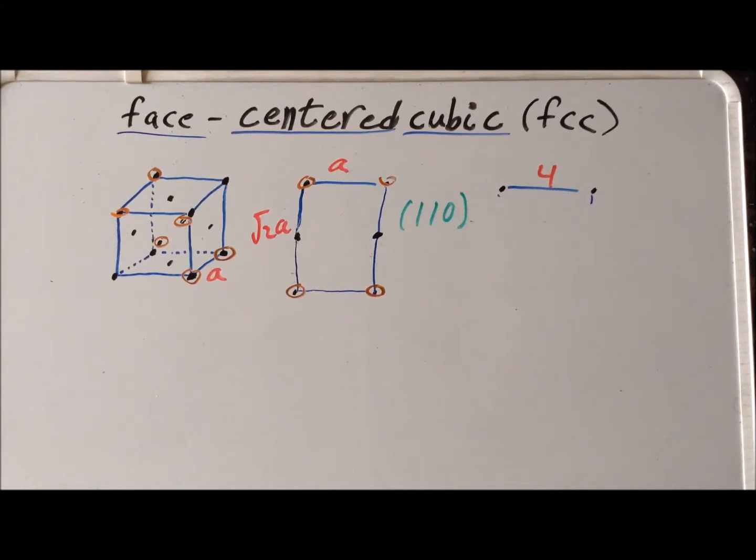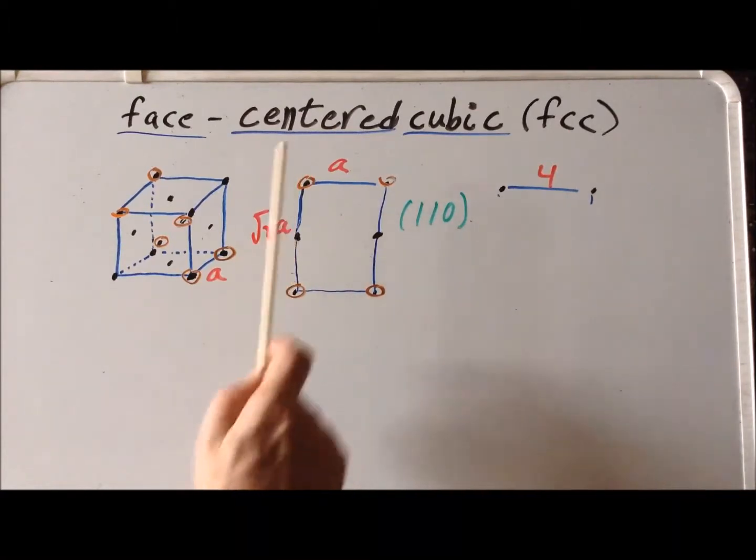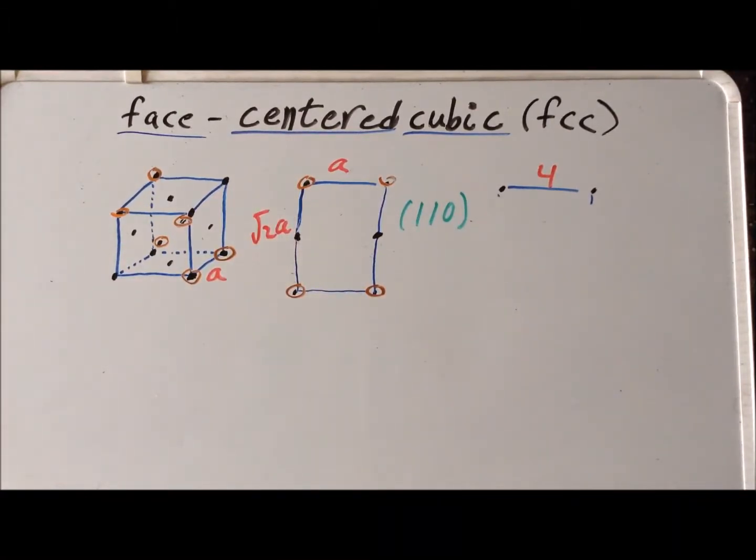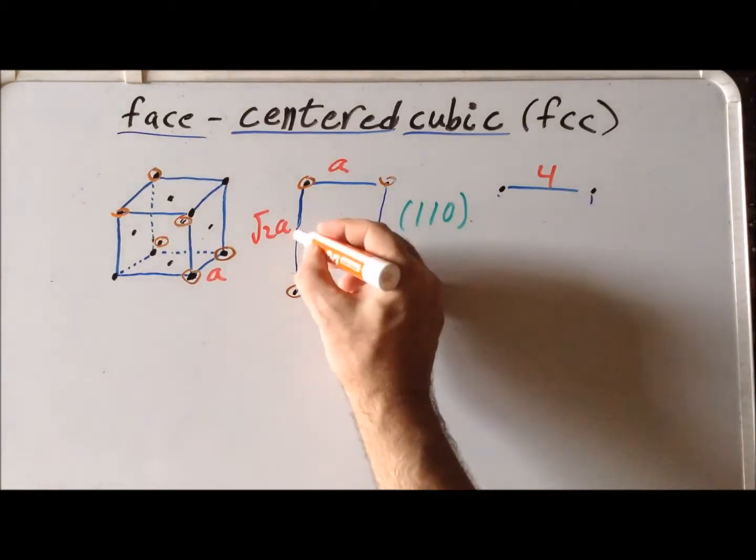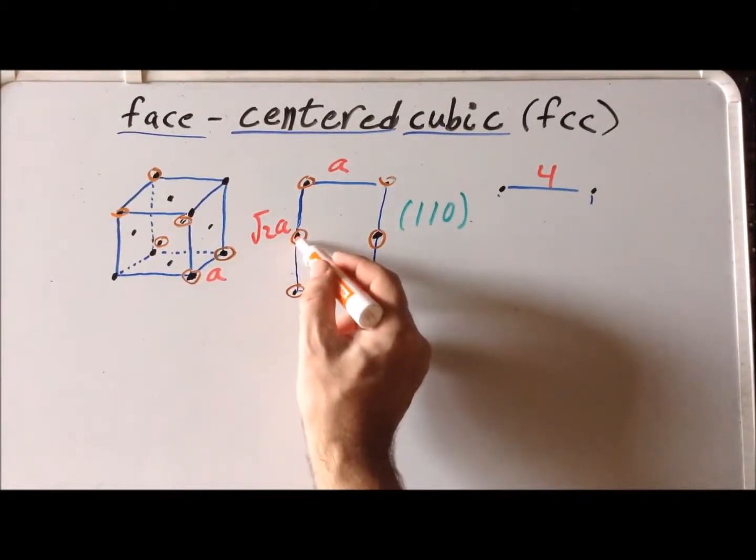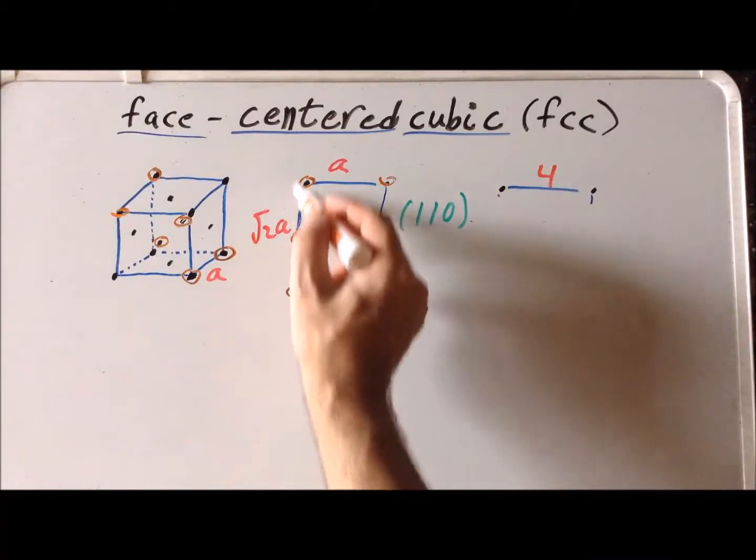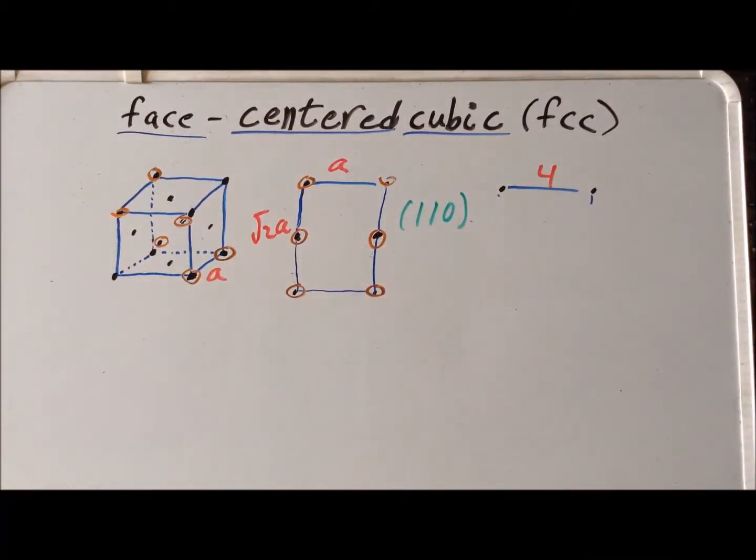So we see that in the face-centered cubic 110 face, we still have this rectangular orientation, but we also have an additional atom in the center of the long side of the rectangle. And this atom is exactly halfway. So it is exactly at the midpoint of the long side of the rectangle as we've drawn it on the whiteboard. And we've drawn it in this particular way just to highlight its similarities and its differences with the simple cubic 110 face.